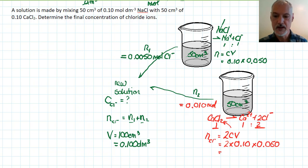Now when I put these two together, I get 0.015 moles of chlorine ions. Concentration is number of moles over the volume.